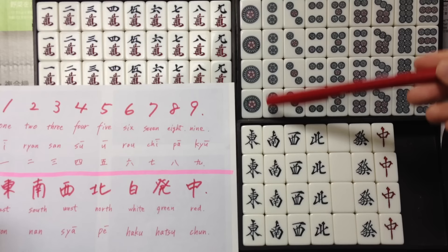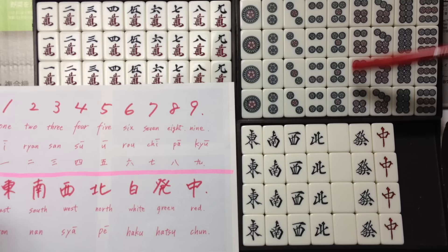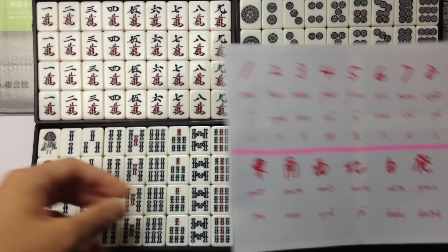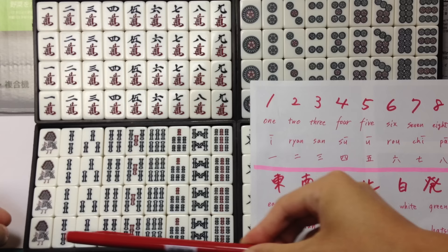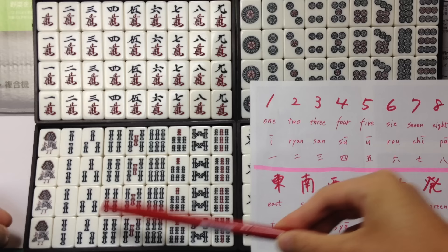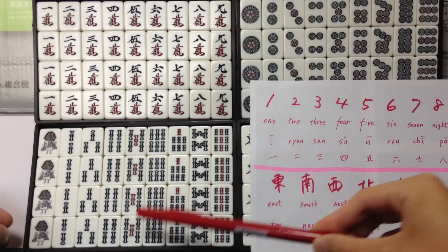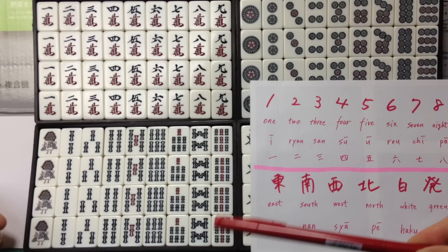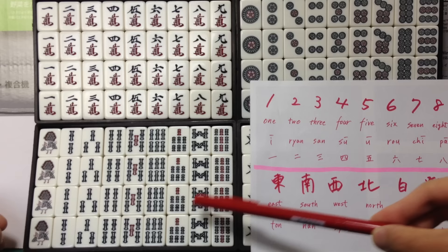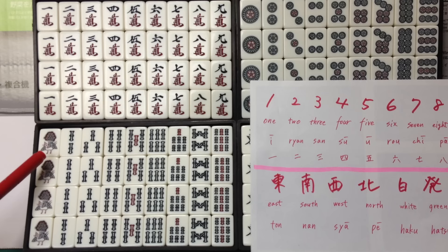Sozu: Iso, lianzou, sanzou, su sou, bu sou, lo sou, chi sou, pa sou, qiu sou. Iso is bird.